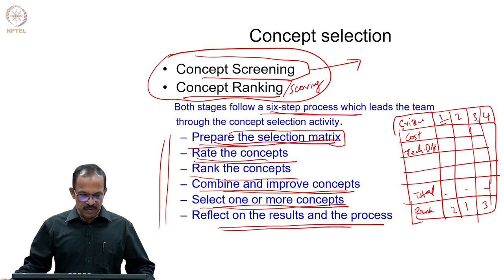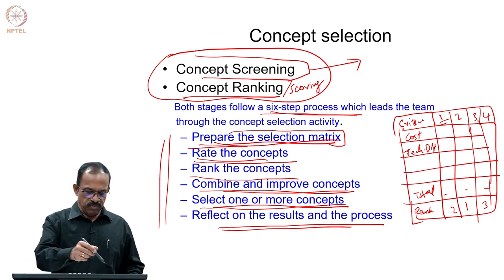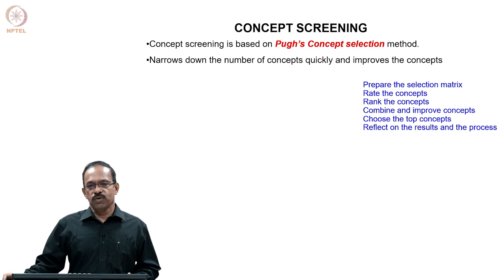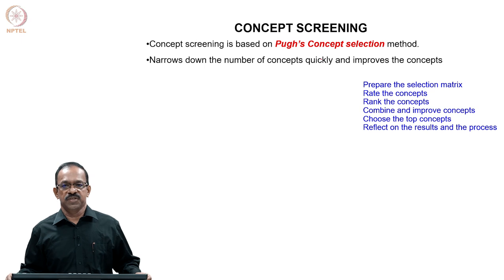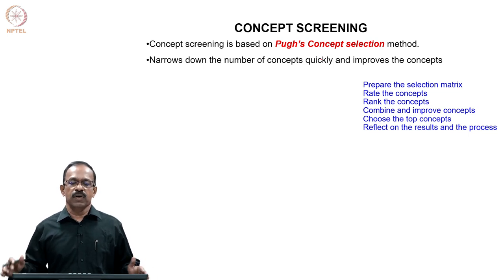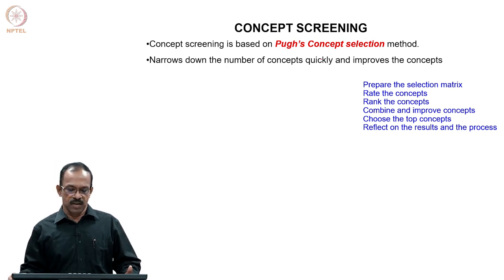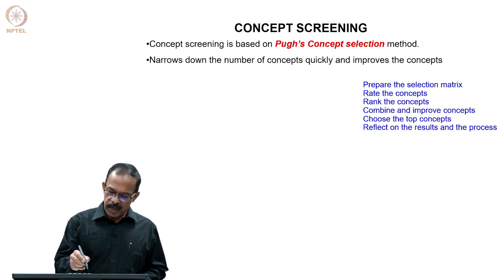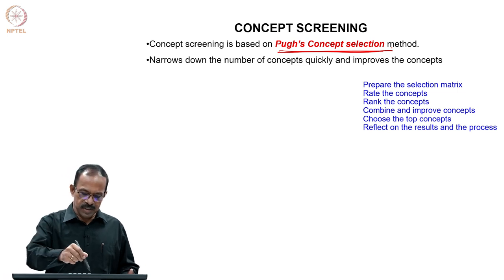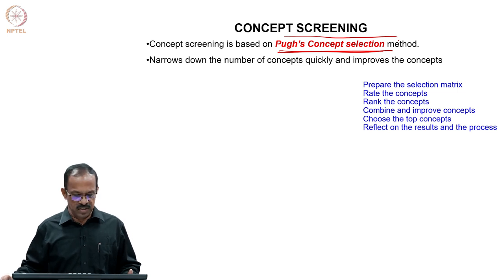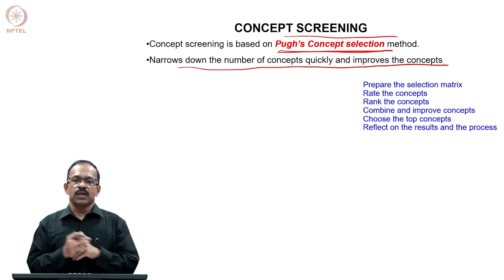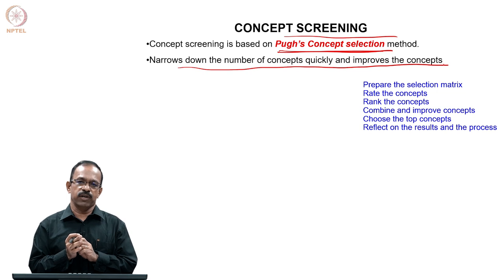Let us see the first stage — concept screening — and how it is done. In concept screening, the idea is to bring down the numbers to a smaller number for better analysis. In the first stage, we do more of a subjective evaluation, not giving any objective values, and bring down the large number of concepts to a smaller number. Here we use something called Pugh's concept selection matrix. Pugh's method is commonly used for this kind of analysis and it actually narrows down the number of concepts quickly and improves the concept.